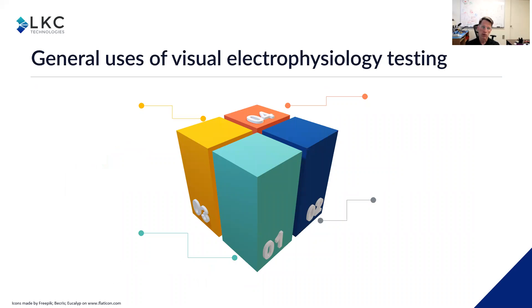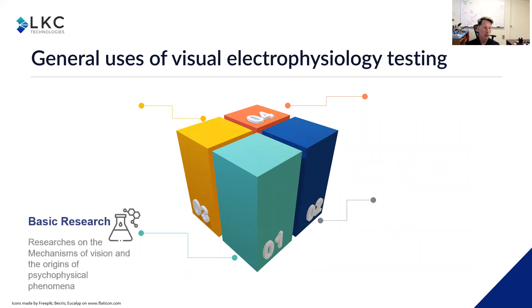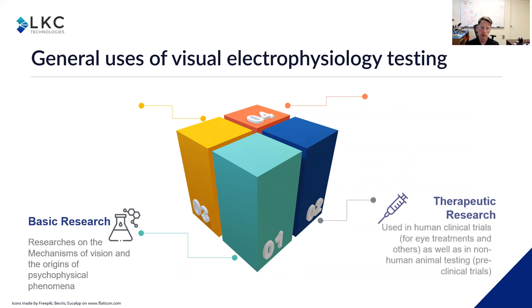Some of the general uses for visual electrophysiology testing include basic research — what are the mechanisms of vision, what are the origins of psychophysical phenomena, and are they originating in the retina or in the brain? You can also use it for therapeutic research like drug trials, used in human clinical trials both for eye treatments as a performance indicator or for other treatments looking at safety profiles. It can also be used earlier in the drug discovery pipeline, testing mice or other non-human animals to see if you can measure some benefit from the drug.